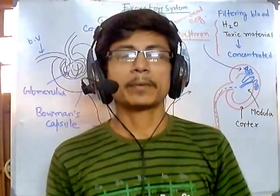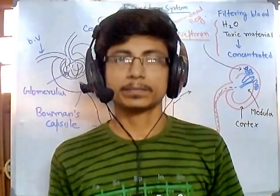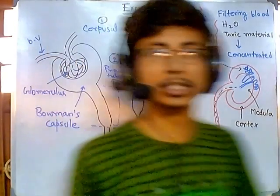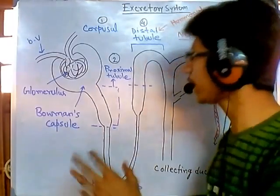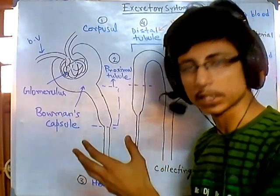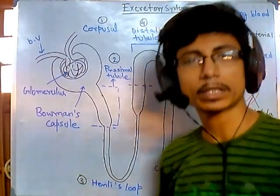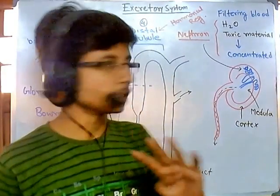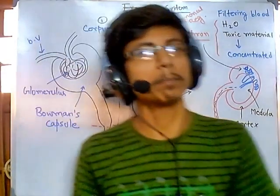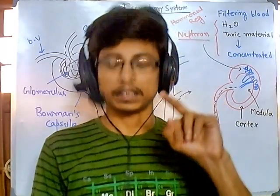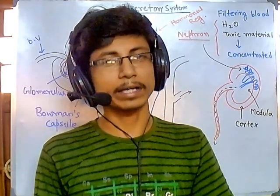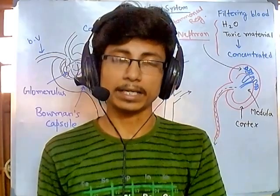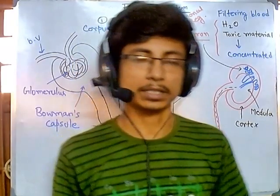Welcome back guys. We are talking about the excretion system in the human body. We have talked about the different functions and different regions of the nephron and their overview. Now in this video we'll be talking about how they achieve their four tasks: filtration of the blood, absorption of nutrients, concentrating the urine, and finally collecting the urine. So let's begin with the tasks.